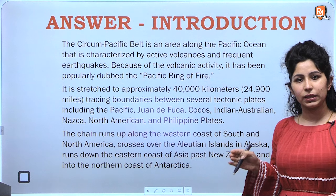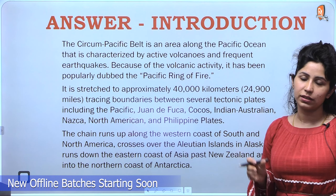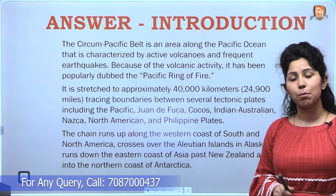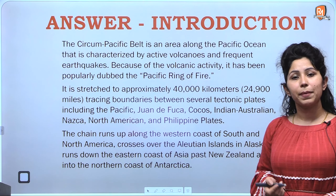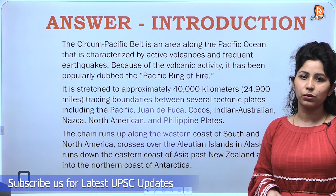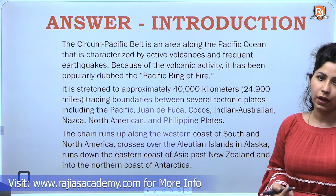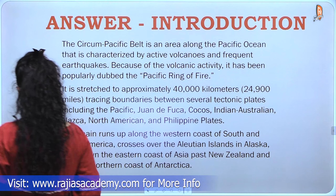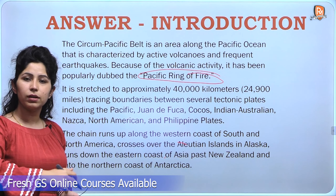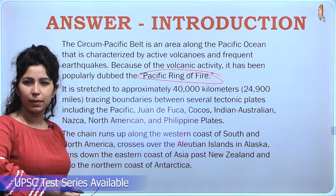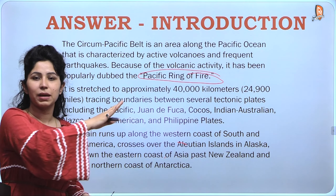This is a very long version; it doesn't adhere to the 150-word limit. This initiative also provides you content regarding every question and every issue, so make sure that when you write your own answer you compress it to 150 words. The Circumpacific Belt is an area along the Pacific Ocean that is characterized by active volcanoes and frequent earthquakes. Because of the volcanic activity, it has been popularly dubbed the Pacific Ring of Fire. We have intelligently used the characteristics of the Circumpacific Zone to introduce its second name in our answer.